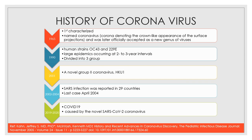Coronavirus was first characterized in 1965 by Tyrell and Null, and it was named coronavirus from 'corona' denoting its crown-like appearance of the surface projection. It was later officially accepted as a new genus. In 1990, a large pandemic was occurring at two to three year intervals caused by coronavirus, which had been identified as containing a human strain.